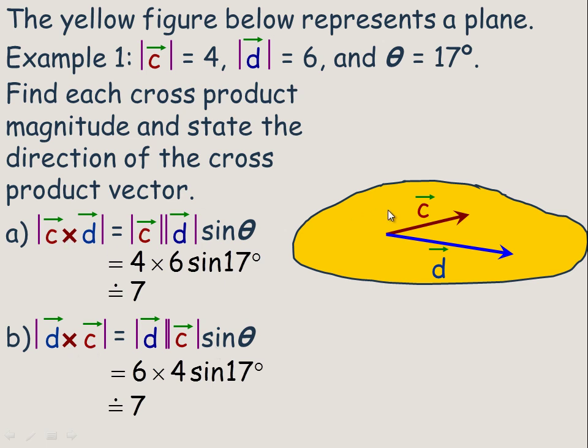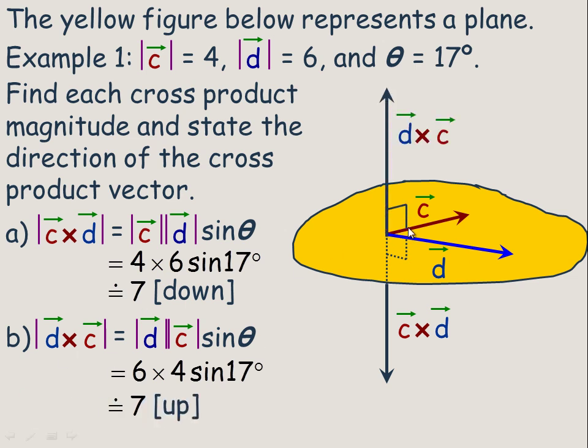Now to do c cross d, if you take your right hand, in order to have your fingers going in the direction of c and curling towards d, the only way that can happen is if your hand is pointing with the thumb down. For the d cross c one, the right hand would be with the thumb up if the fingers are curling from d towards c. So that's the direction of the d cross c vector up, out of the page.